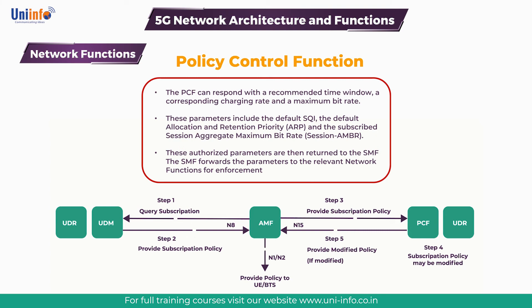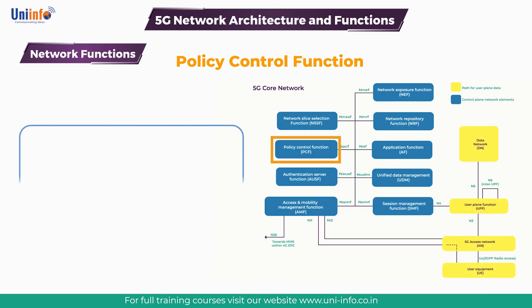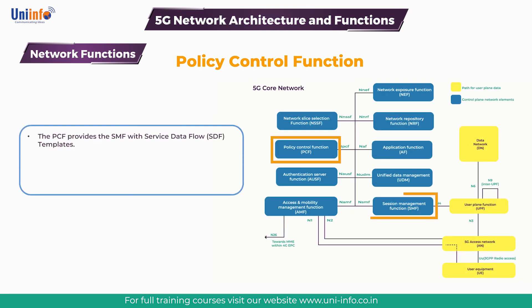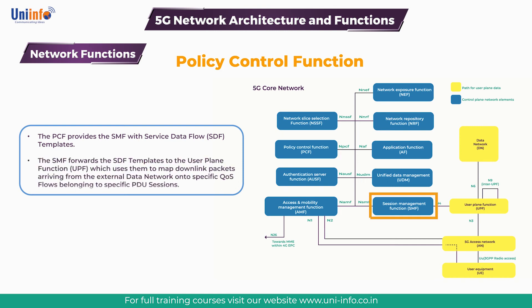The SMF forwards the parameters to the relevant network functions for enforcement, for example they are forwarded to the user plane function UPF. The PCF also provides the SMF with service data flow SDF templates. The SMF forwards the SDF templates to the user plane function, which uses them to map downlink packets arriving from the external data network onto specific QoS flows belonging to specific PDU sessions.